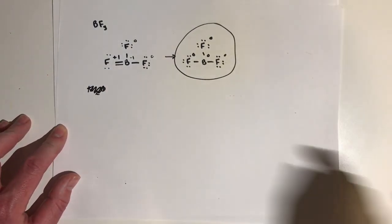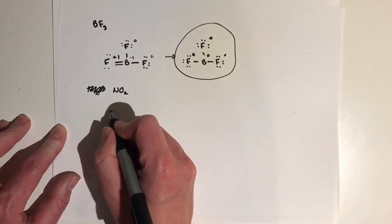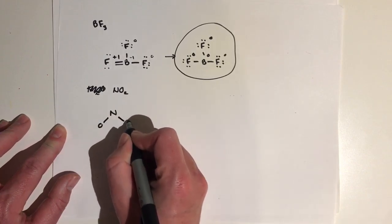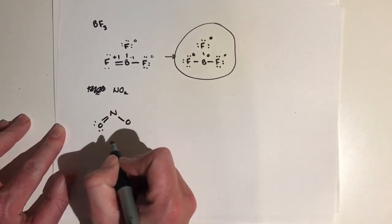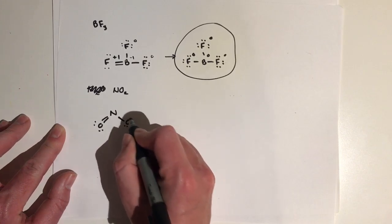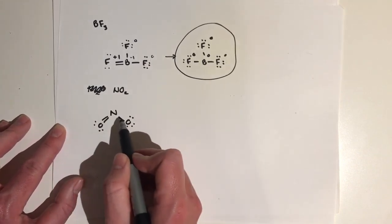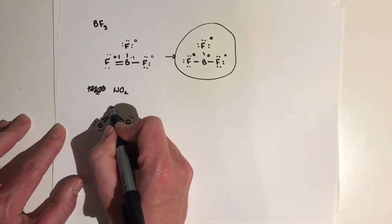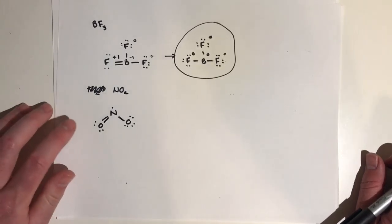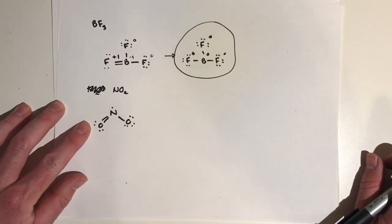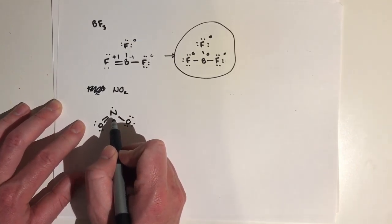Let's talk about our next exception by looking at NO2. We're going to have a nitrogen in the middle and two oxygens. If we put a double bond on one of these oxygens, that gives us two lone pairs on that oxygen and three lone pairs on the other one. If we do the math, that's going to be 17 electrons. Because we have an odd number of electrons in the molecule, we're left with this single electron on our nitrogen.